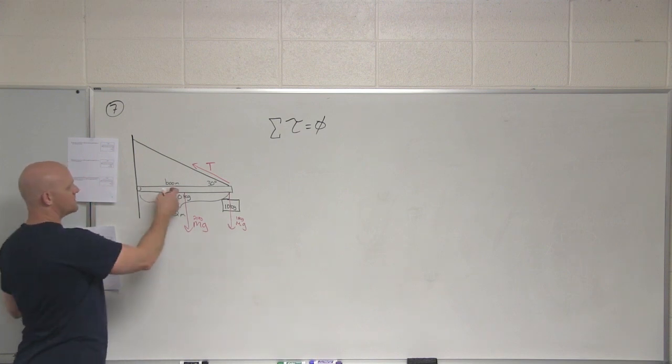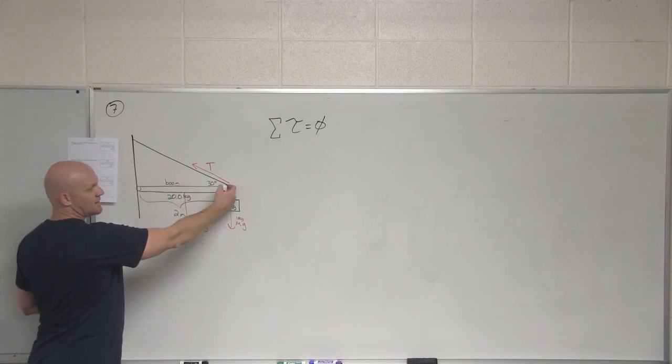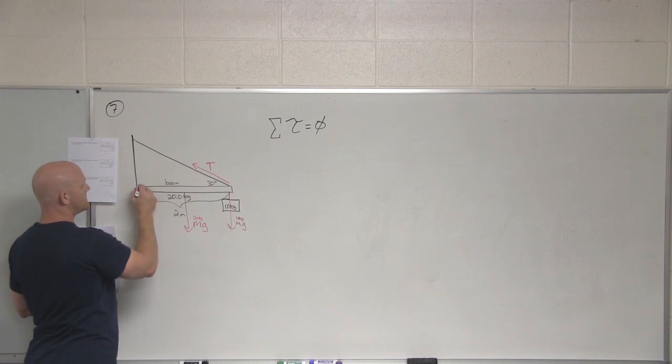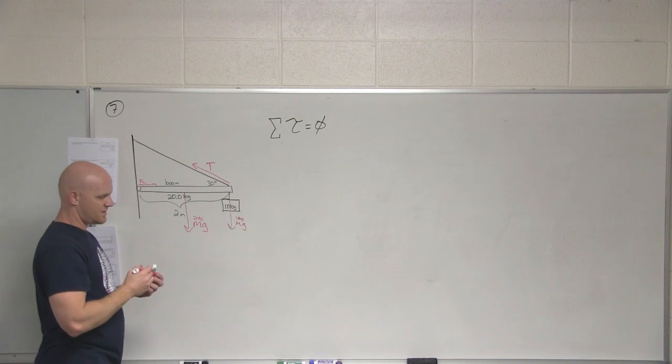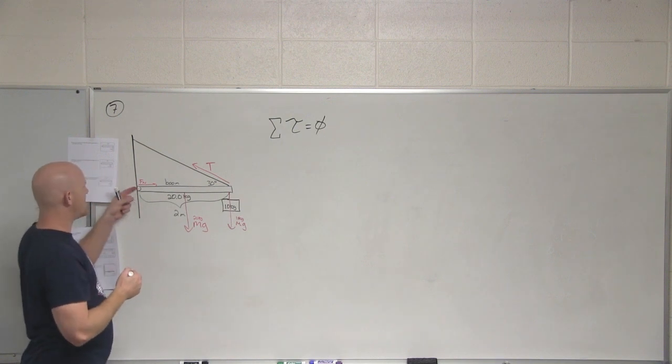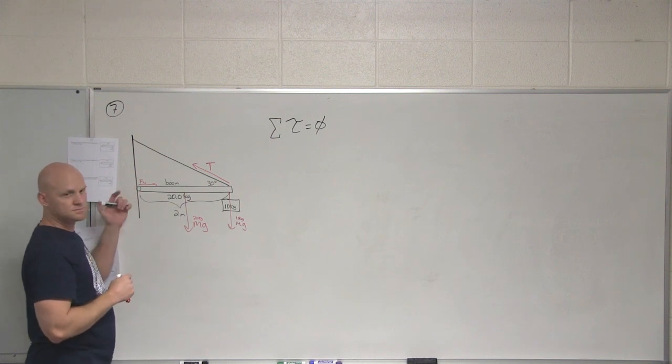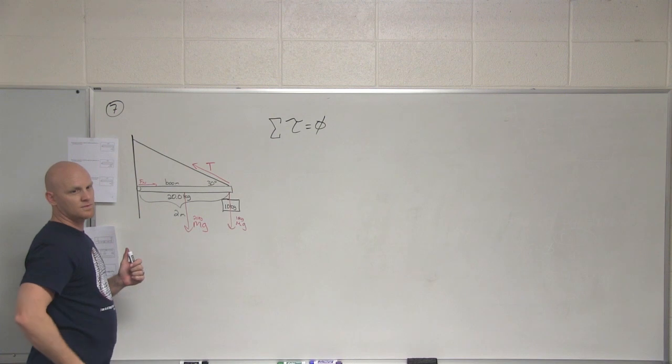So the boom here, notice this cable is pulling the boom to the left, right? So the hinge there must be a normal force pushing back. But also think about it this way: if this hinge is not connected to the wall to the right, then we're missing another one.